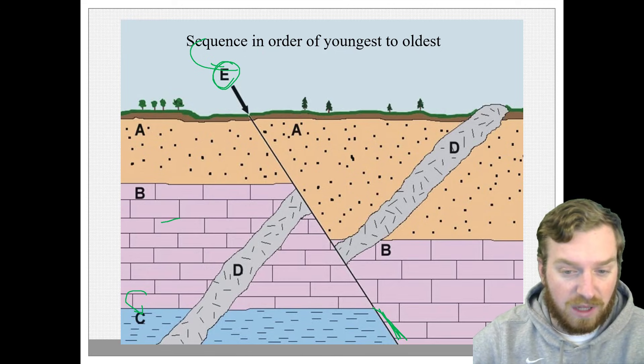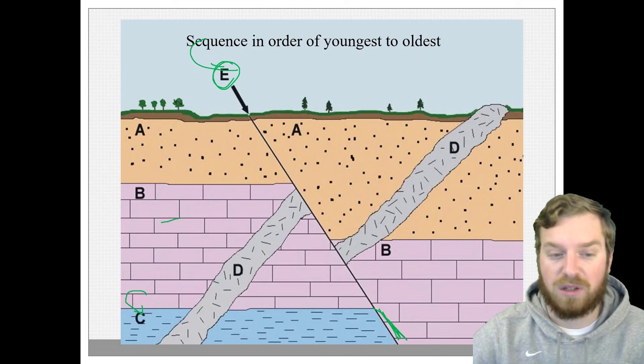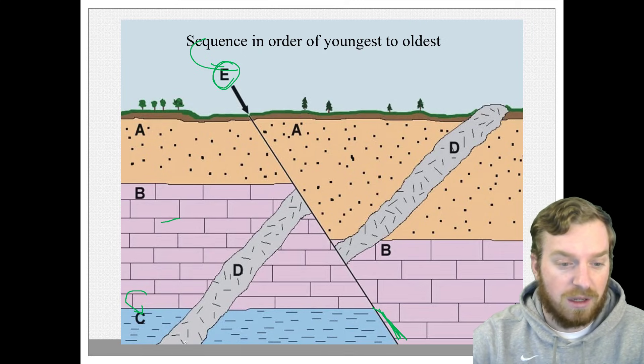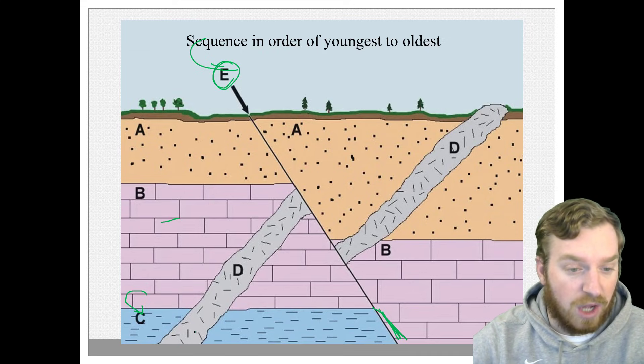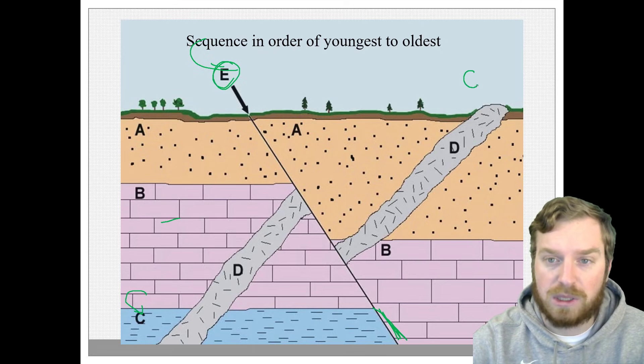Because if the fault line cuts through rock layer C, well then rock layer C had to be there at the time of the fault line. And same thing with the igneous intrusion D right here. Because igneous intrusion D cut through rock layer C, well C had to exist. So C is actually the oldest one.